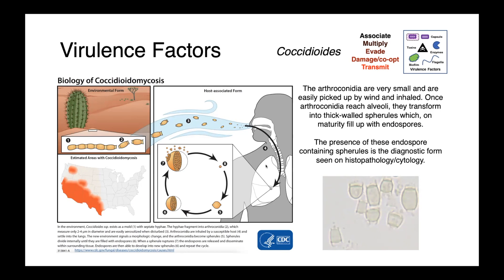Coccidioides species also grow in the mycelial phase in the environment. The arthroconidia are very, very small, so they can be easily aerosolized under windy conditions. Once inhaled, they convert into those spherules in the lungs. Within those spherules, endospores develop, and these Coccidioides endospores can then disseminate to distant tissues within the body.